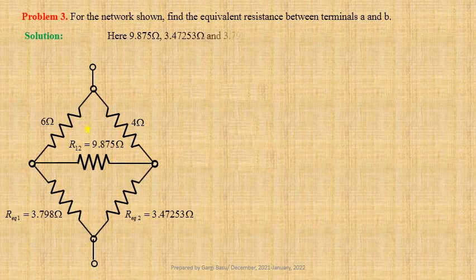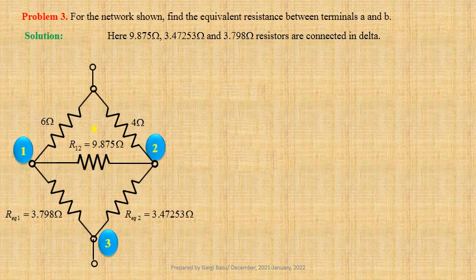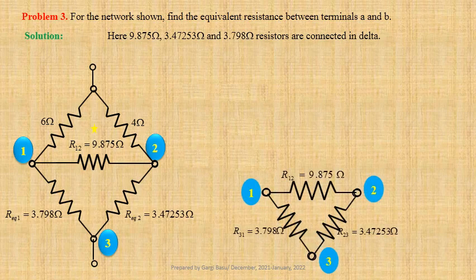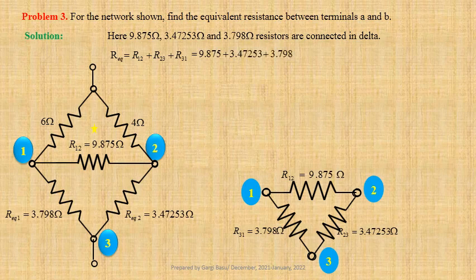Let us redraw the network. Here 9.875 ohm, 3.47253 ohm and 3.798 ohm resistors connected to nodes 1, 2 and 3 form a delta. We shall transform this delta to its equivalent star. Let us calculate Req equals R12 plus R23 plus R31; using values we get 9.875 plus 3.47253 plus 3.798 equals 17.14553 ohm. We know R1 equals R31 times R12 divided by Req.